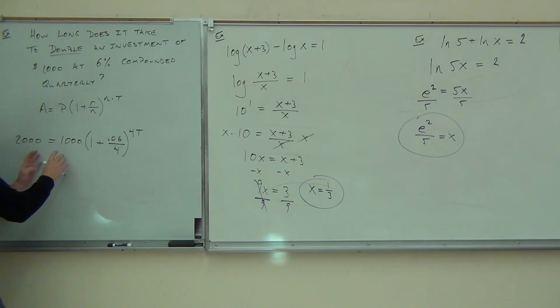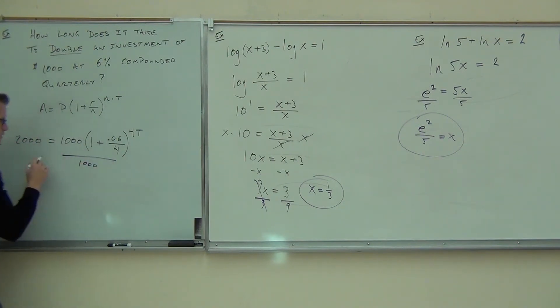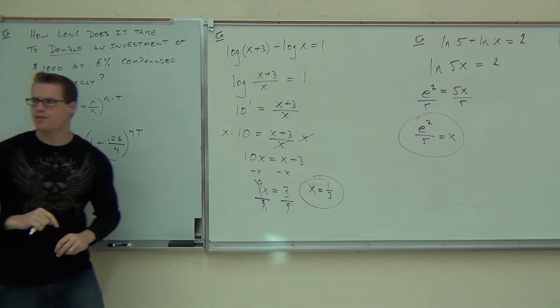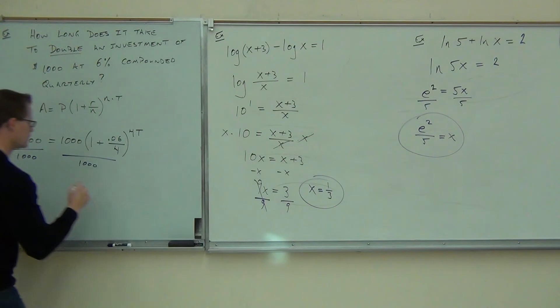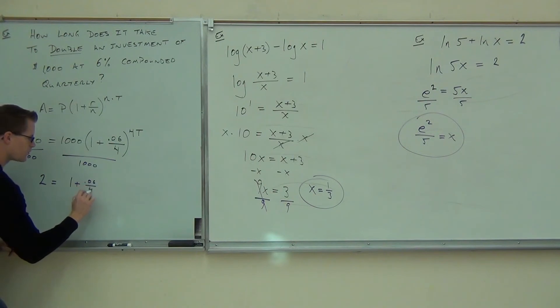Firstly, you're going to work to try to get to that T. The first thing you've got to do, you can't distribute that. That's got an exponent to it. But the only thing you need to do is get rid of that one thousand. You do that by division. How much is two thousand divided by one thousand? Two. So two equals one plus point zero six over four to the four T power.